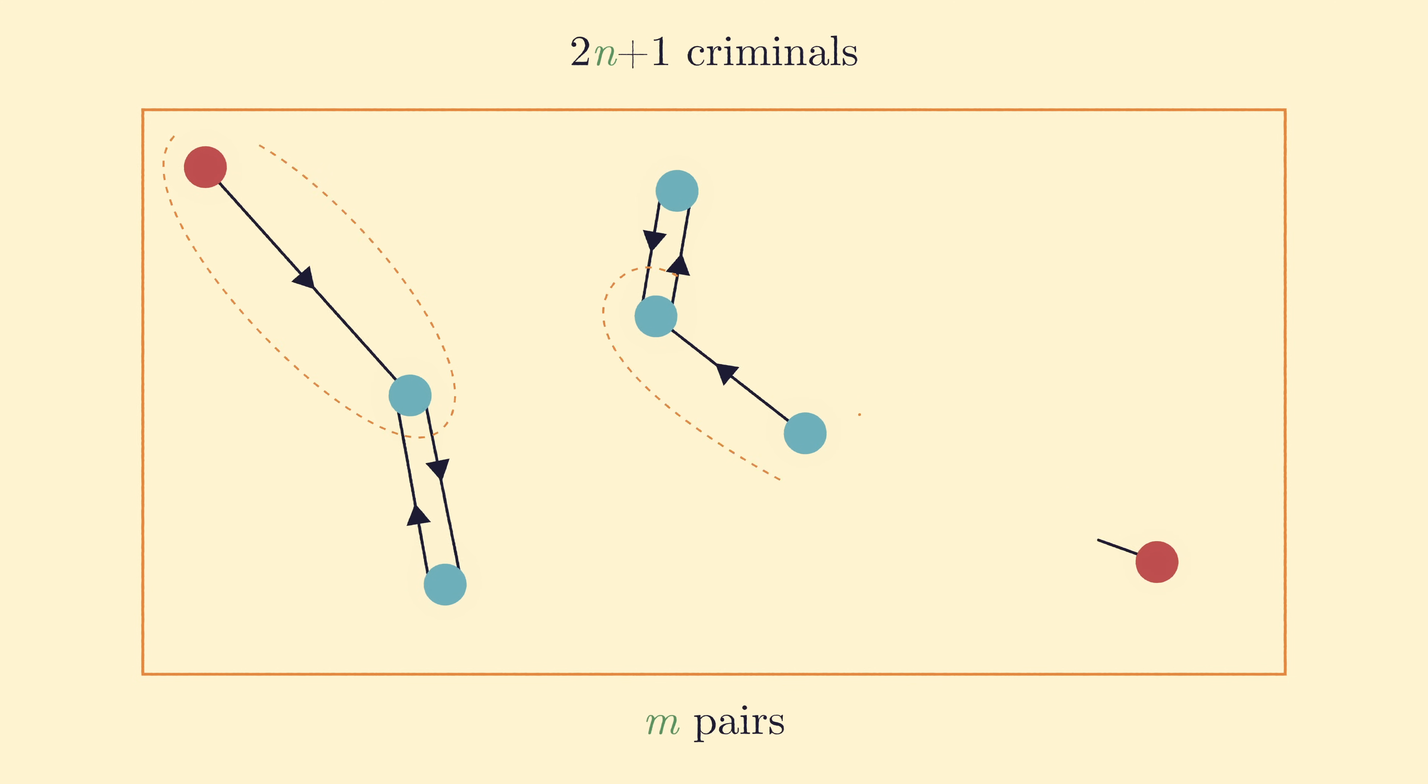After seeing this, it starts to seem clear why oddness was important to the question. We can suppose that there are m pairs of criminals who are in such a staring contest with a cycle of length 2, and then all the other criminals must be in some path on the graph.